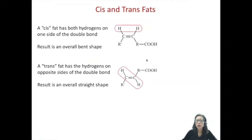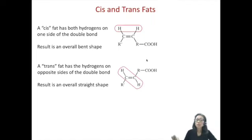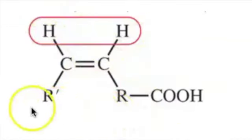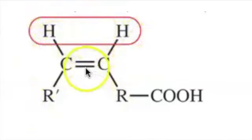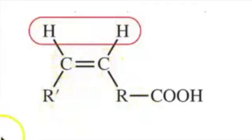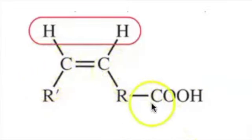The overall shape of a saturated fatty acid is straight. When you have a double bond, the overall shape will depend on the type — whether it's a cis or trans double bond. In the cis arrangement, the hydrogens are on one side, which causes the rest of the hydrocarbon chain to lead off in opposite directions, forcing a bent shape of the overall fatty acid.